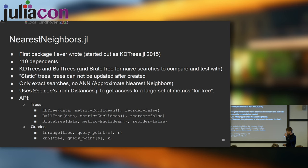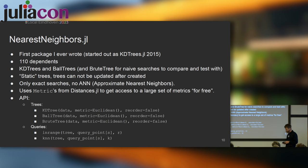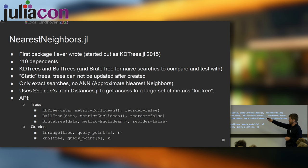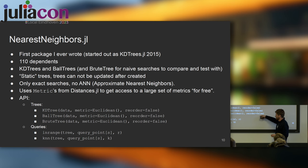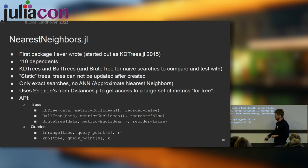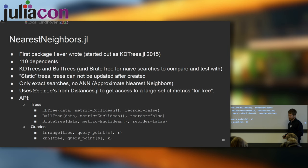The API is quite small, which is nice. You create your KD tree, ball tree, or brute-force tree with your data — which can be a matrix of dimension-times-number-of-points or a vector of points. You specify the metric you want, and there's a reorder argument for performance I'll discuss later. Then the queries are: find all points within a given radius, or find the K nearest neighbors to some input points.